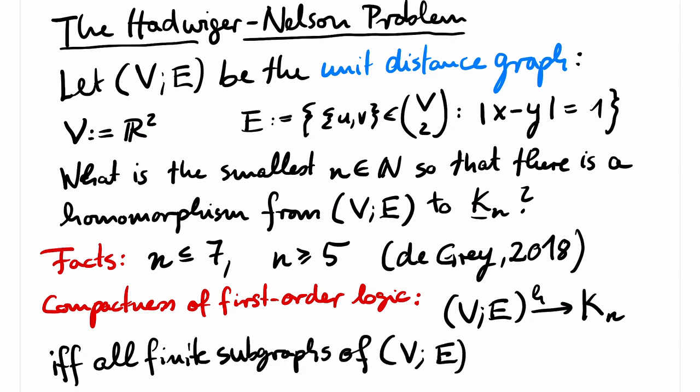This shows that in order to solve the Hadwiger-Nelson problem, it suffices to find a five coloring for all finite subgraphs of the unit distance graph.